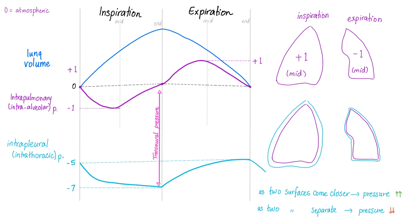If you understood the previous slide, this is going to be a piece of cake. Lung volume is here in blue. When you inspire, you increase lung volume. The lung volume increases to the maximum, and then you expire — back to normal. The intrapulmonary pressure, which is the pressure inside the lung, is here in purple. As you breathe in, the volume increases. According to Boyle, the pressure will decrease. When the pressure decreases, it pulls the air in. The air comes in, and the pressure starts to normalize because now there is air filling the void until it becomes atmospheric.